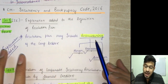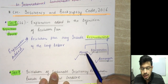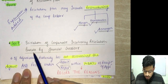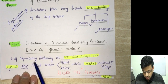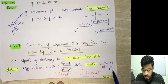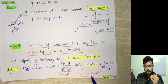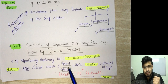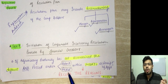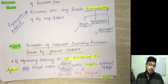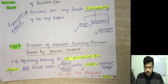Section 7 deals with the initiation of the Corporate Insolvency Resolution Process by a financial creditor. Amendment: if the adjudicating authority has not ascertained the default and has not passed an order either admitting or rejecting within 14 days of receipt of application, then it has to record the reasons. So if the adjudicating authority has not ascertained the default but still passes an order admitting or rejecting, it must record the reasons for doing so.